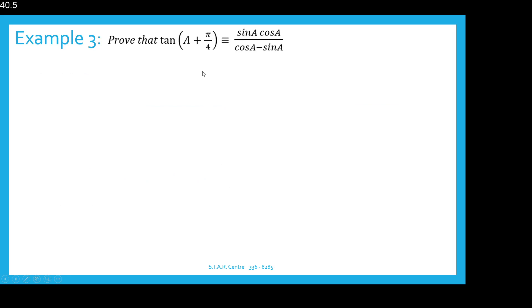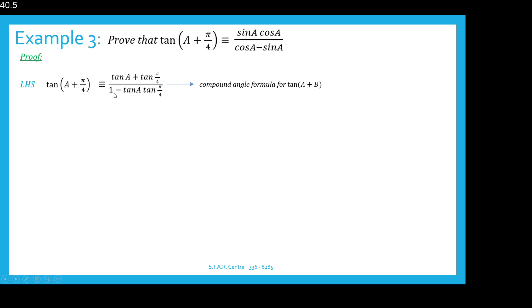Example 3: Prove that tan of A plus pi over 4 is identical to (sin A plus cos A) over (cos A minus sin A). In the bracket we can have any angle or variable — it is just applying our knowledge of the compound angle formula and simplifying. Starting with the left hand side: tan of A plus pi over 4, we use the formula for tan(A+B) where B is pi over 4, giving tan A plus tan(pi/4) all over 1 minus tan A times tan(pi/4).